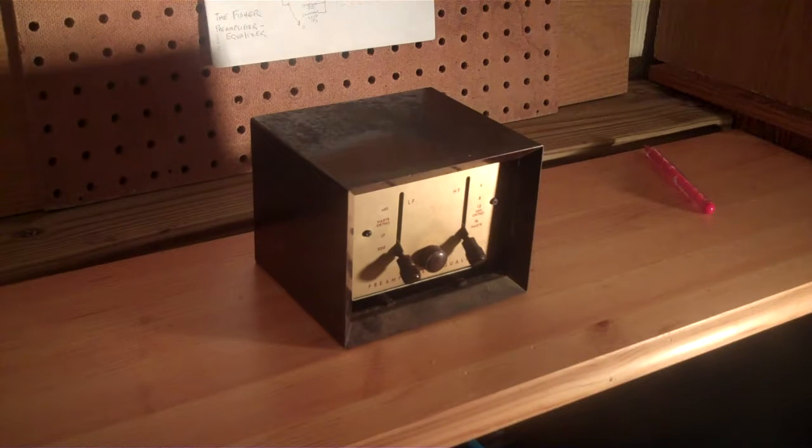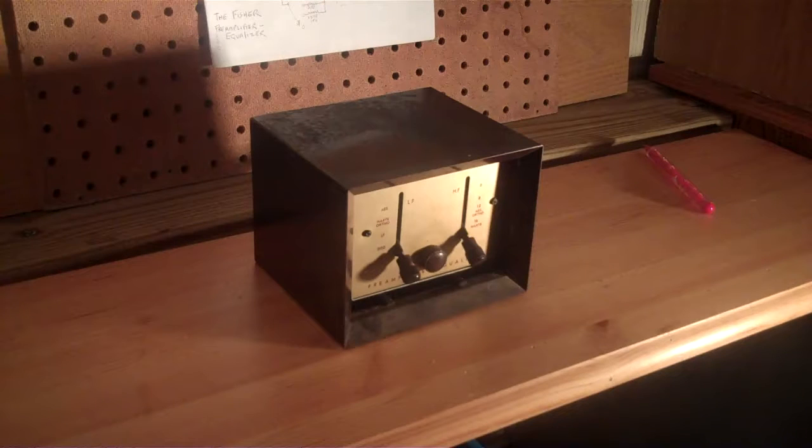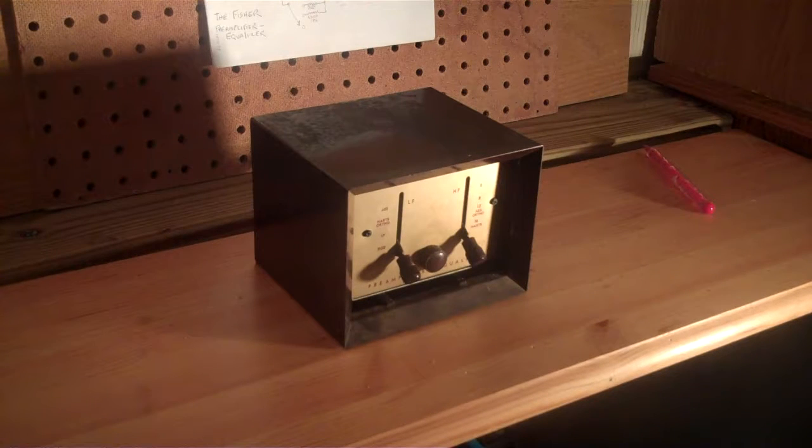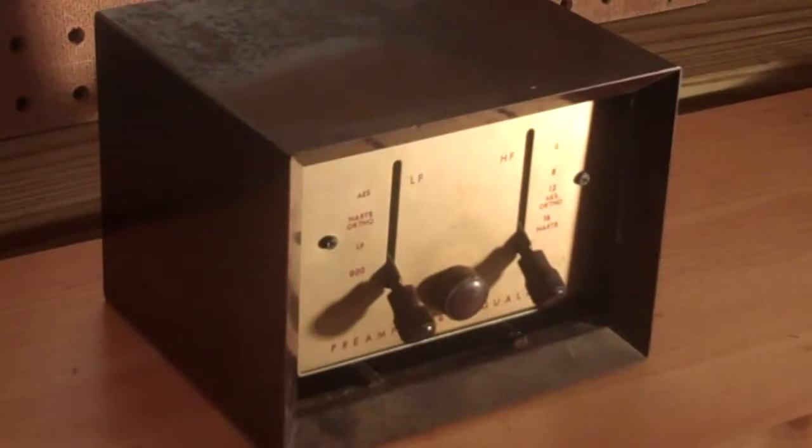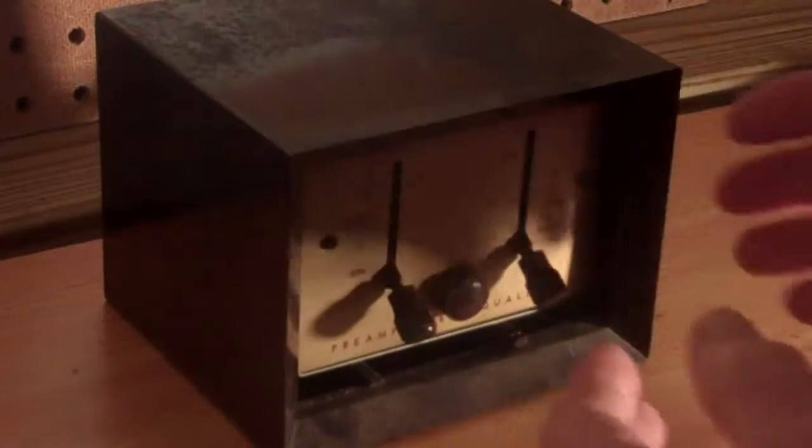What I have here is a Fischer pre-amplifier equalizer. It's a tube type using a 6SC7. I've already taken it apart. I've not made any changes to it.